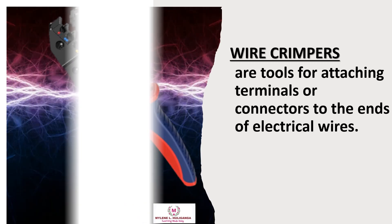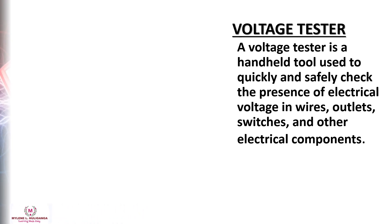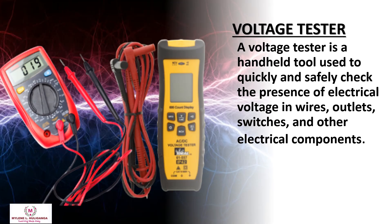The wire crimper: wire crimpers are tools for attaching terminals or connectors to the ends of electrical wires. The voltage tester is a handheld tool used to quickly and safely check the presence of electrical voltage in wires, outlets, switches, and other electrical components.